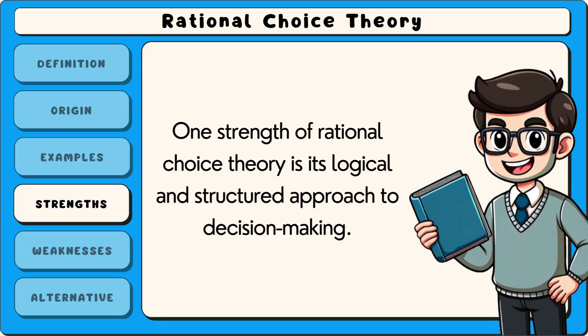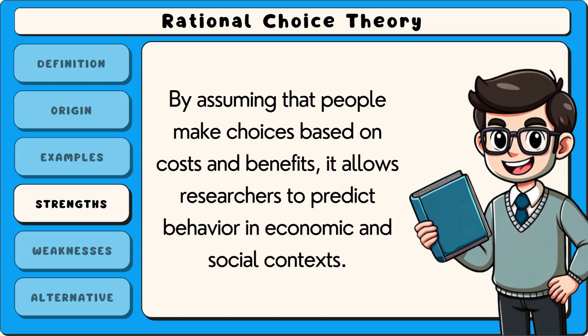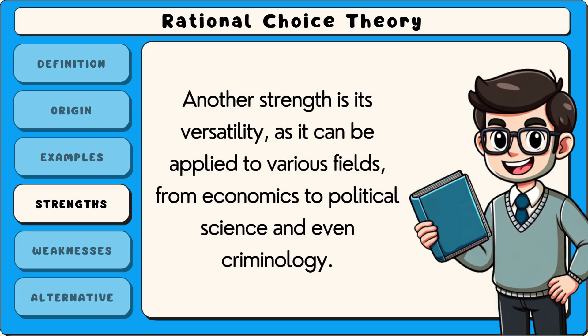One strength of rational choice theory is its logical and structured approach to decision-making. By assuming that people make choices based on costs and benefits, it allows researchers to predict behaviour in economic and social contexts. Another strength is its versatility, as it can be applied to various fields, from economics to political science and even criminology.